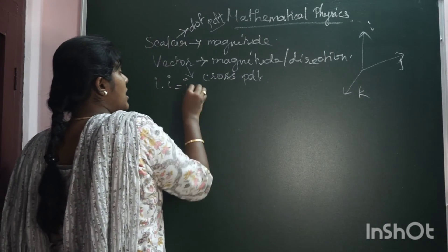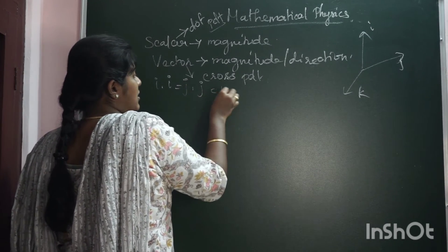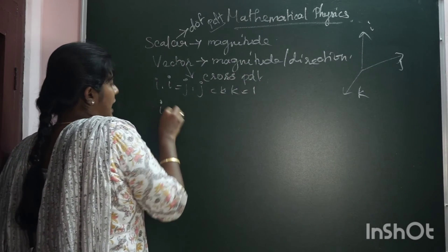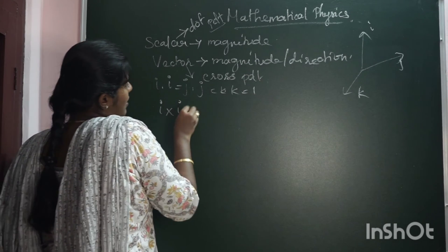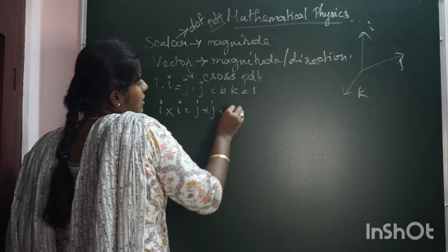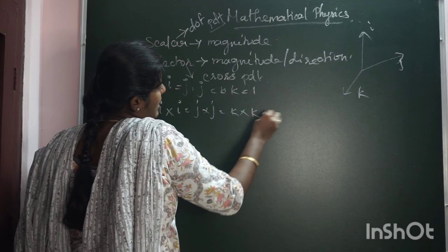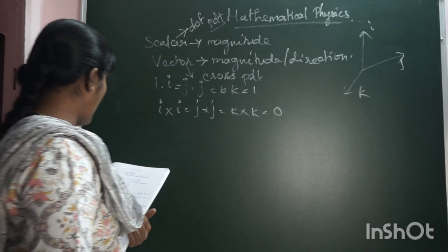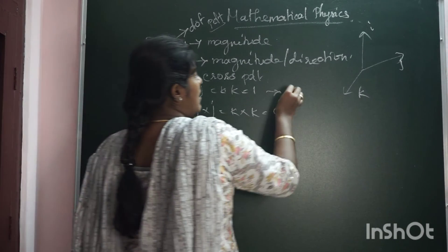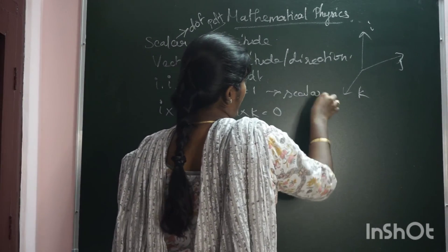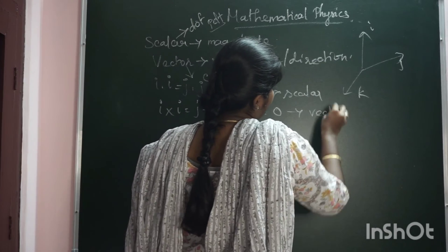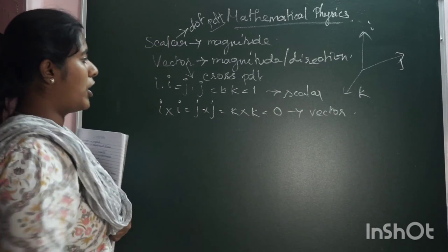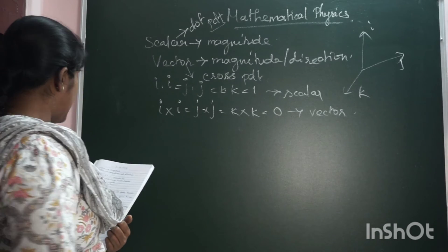And the cross product of two same vectors will be equal to 0. So: I·I = J·J = K·K = 1, and I×I = J×J = K×K = 0. This is the scalar product and this is the vector product.